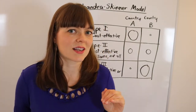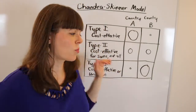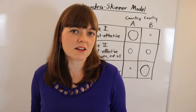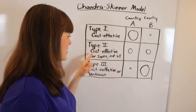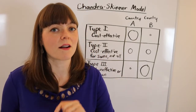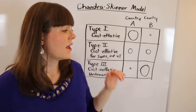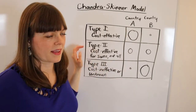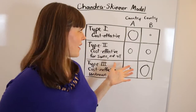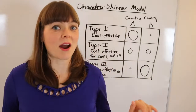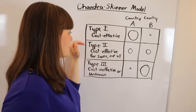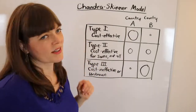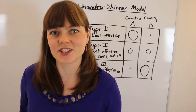The really interesting category is the one in the middle — type two technologies. These are technologies that are cost effective for some people but not for all. This is the category that has most changed my thinking, so it's worthwhile looking at the graphs in the paper to better understand exactly what they mean by type one and type two technologies.